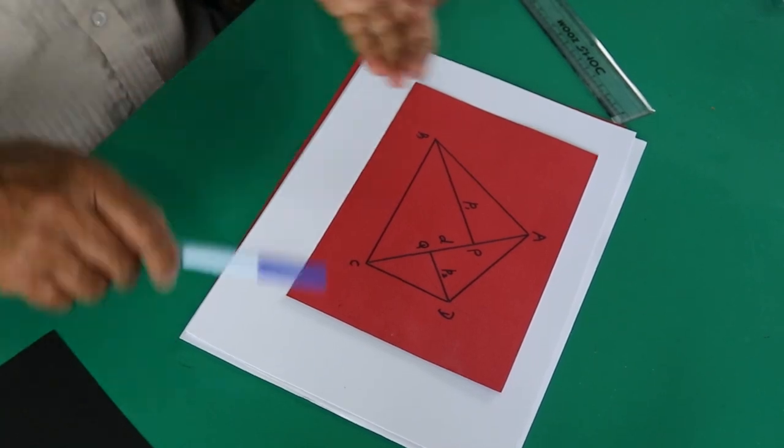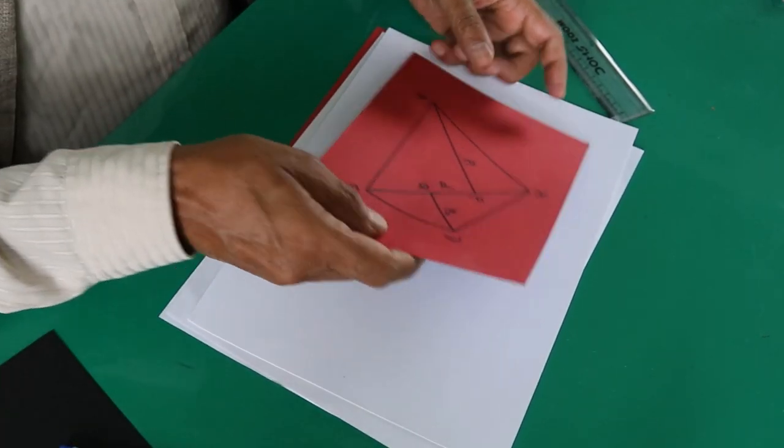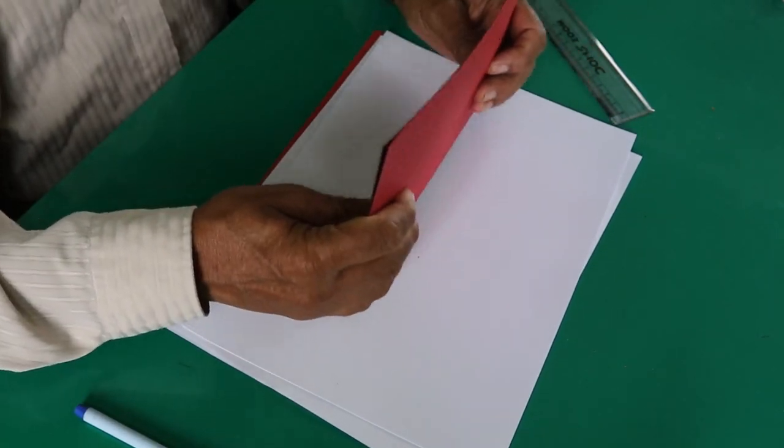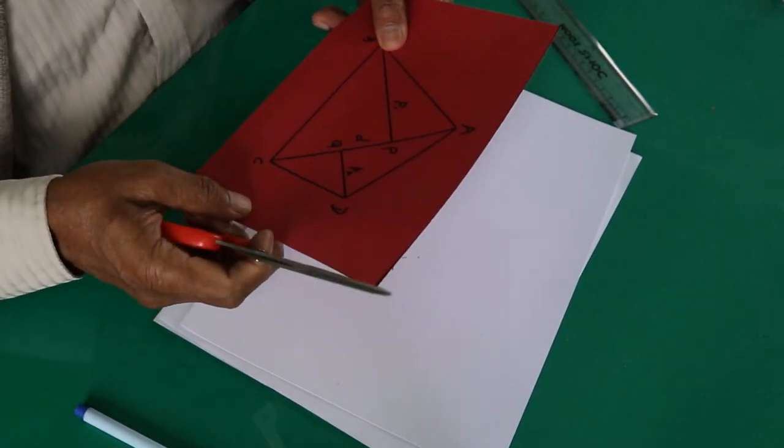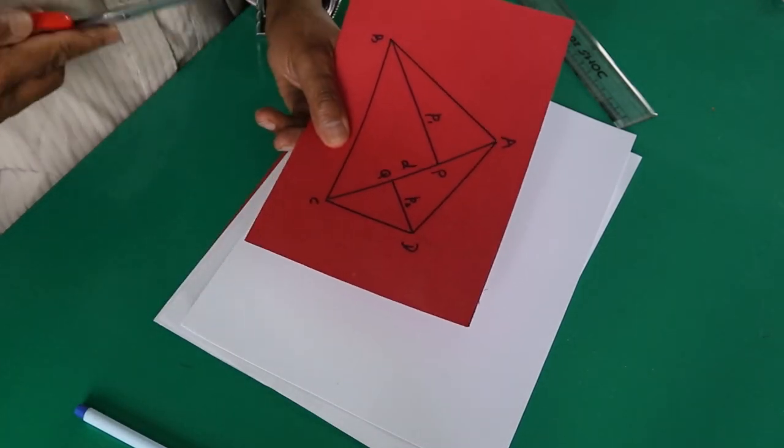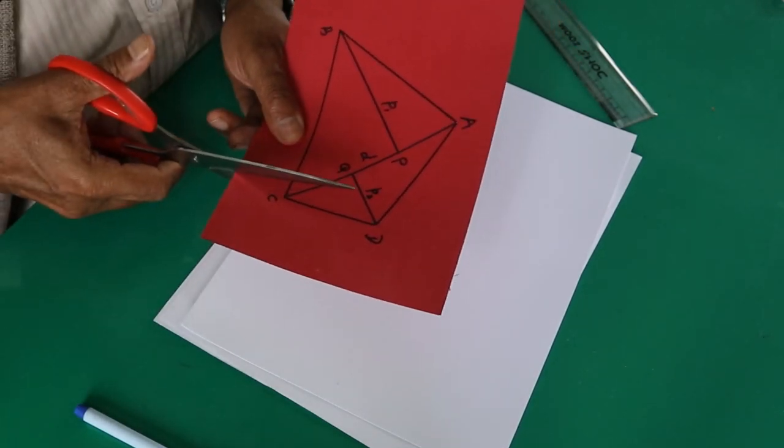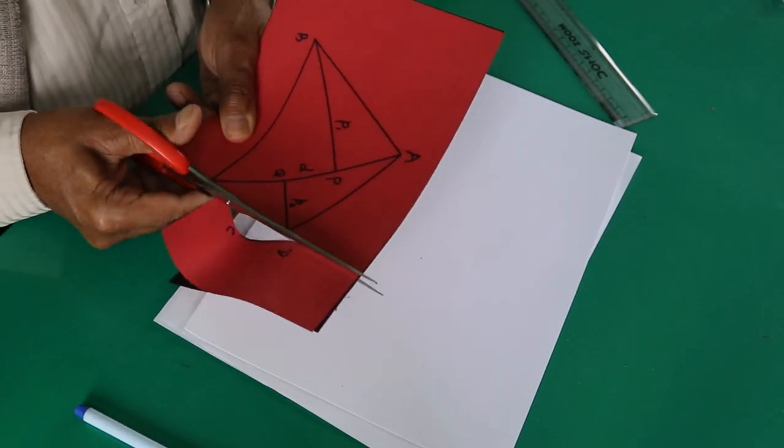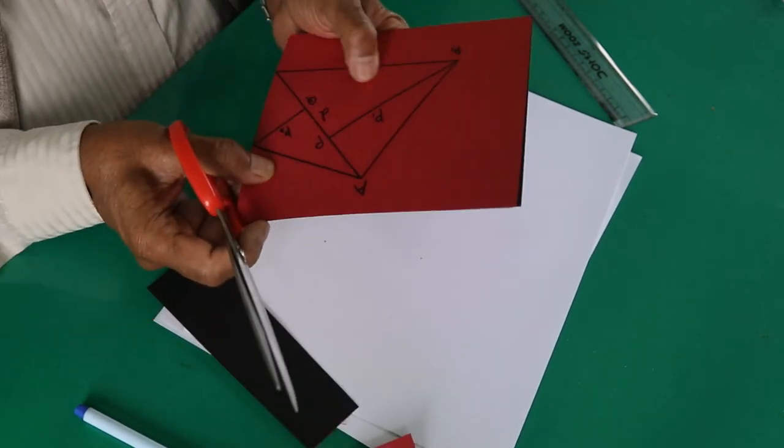Cut out using the scissor. Take another sheet of paper and cut it out so that you can cut into two quadrilaterals at the same time. Now cut along the boundary line. This is the quadrilateral.